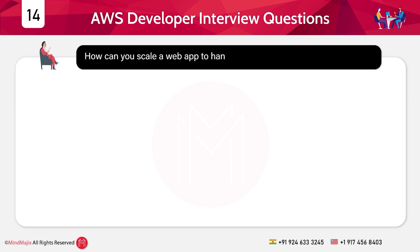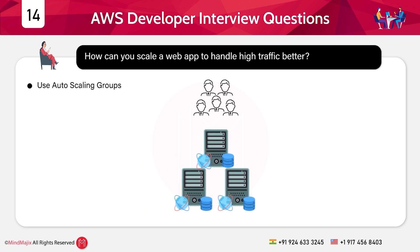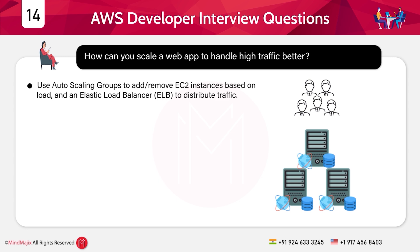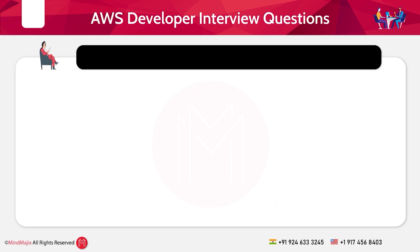Question 14: How can you scale a web app to handle high traffic better? Answer: Use Auto Scaling Groups to add or remove EC2 instances based on load, and an Elastic Load Balancer to distribute traffic. You can also integrate CloudFront for global caching.